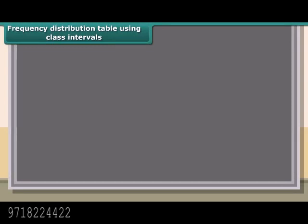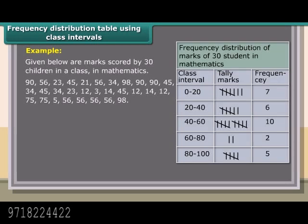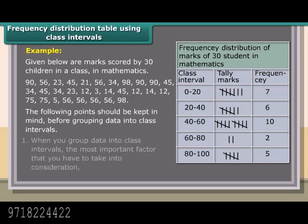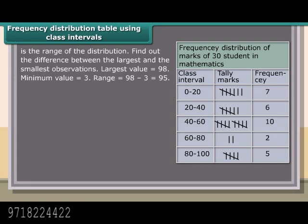Frequency distribution table using class intervals. Example: Given below are marks scored by 30 children in a class in mathematics. The following points should be kept in mind before grouping data into class intervals. 1. When you group data into class intervals, the most important factor is the range of the distribution. Find out the difference between the largest and the smallest observations. Largest value = 98, Minimum value = 3, Range = 98 minus 3, which equals 95.